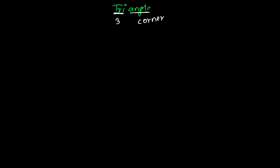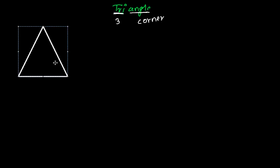To make it more understandable, let me give you a simple example. Here I have a geometrical shape with three corners. Suppose this is A, this is B, and this is C. Here is a line segment AB and another line segment BC. These two line segments intersect and form a corner.